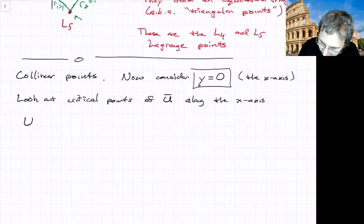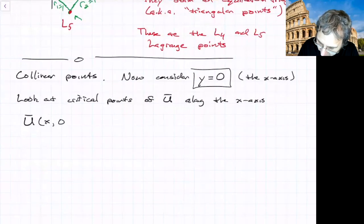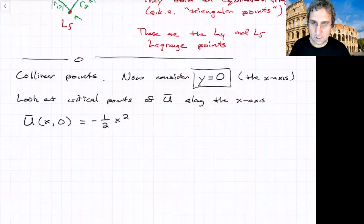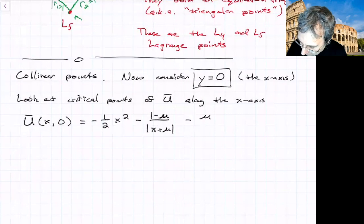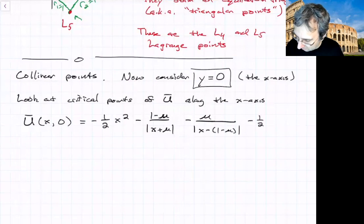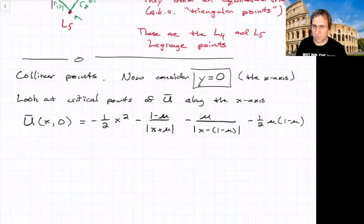If I write U bar (x,0), setting y equal to 0, we'll have 1/2 x squared minus (1-mu) over r1, which I'll write as absolute value of x plus mu, minus mu over r2, which is absolute value of x minus (1-mu), and then we have that other term, 1/2 mu(1-mu). But that won't really affect things.